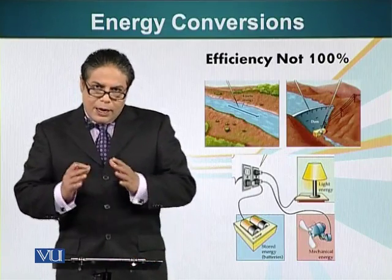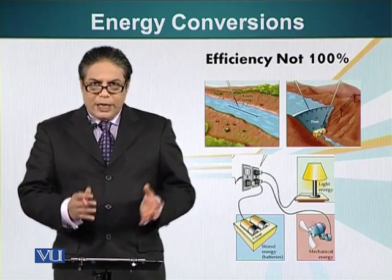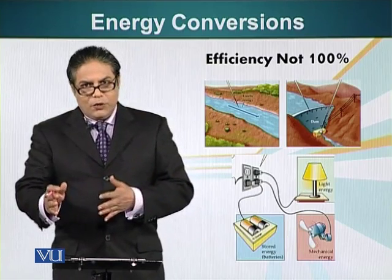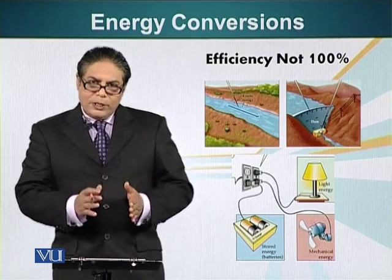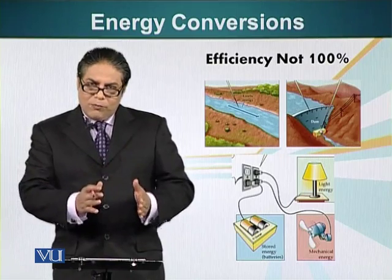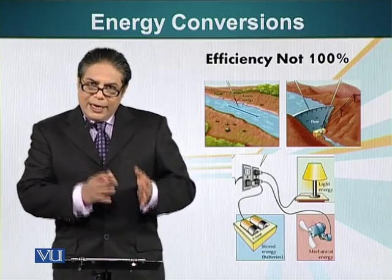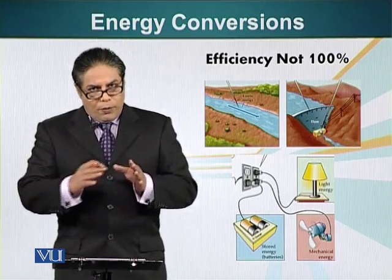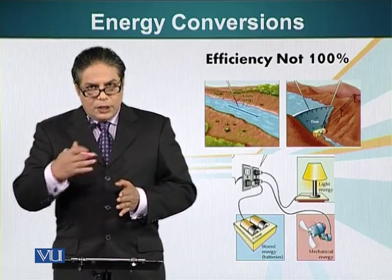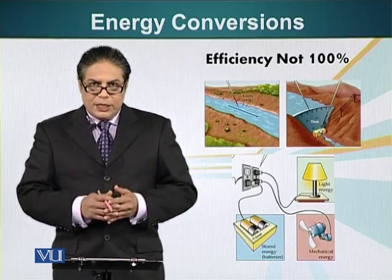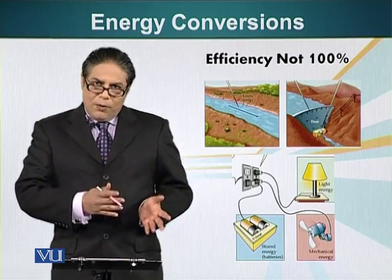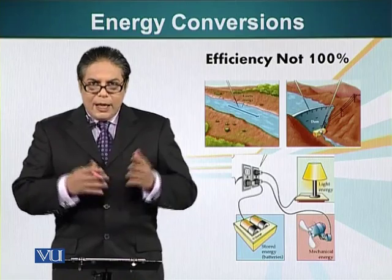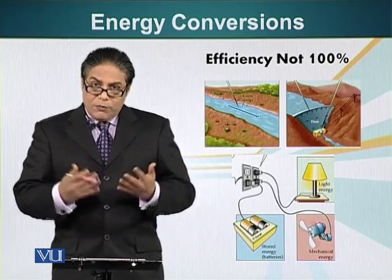Energy can be converted from one form to another. For example, if a river is running, it has kinetic energy because it is the energy of motion. We put a dam in the way of the river — we block the flow of water, and that kinetic energy is converted into potential energy. We release water from the dam, it helps us turn the turbines and generate electricity. We get electricity in our home, and this electricity can be converted into different forms — for example, light, heat, or the mechanical energy of a fan.